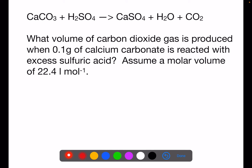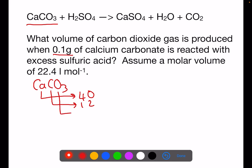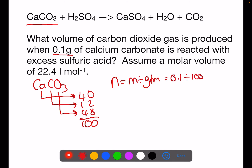The first thing that we're going to do here is to calculate the number of moles of calcium carbonate because we have the mass for that. We'll start by working out the GFM of calcium carbonate, which is 100. We can then calculate moles as mass divided by gram formula mass: 0.1 grams divided by 100 gives a number of moles of 0.001.